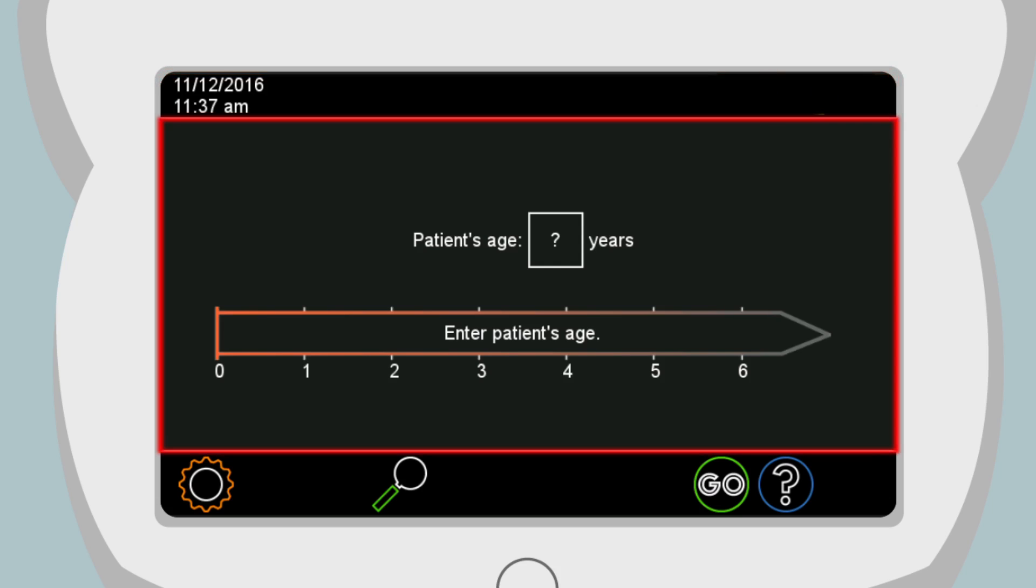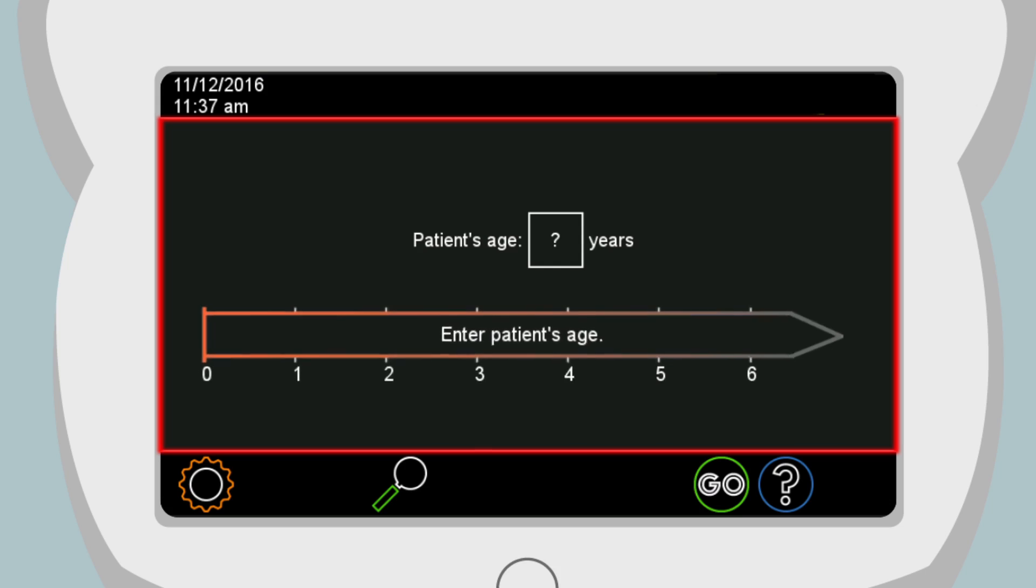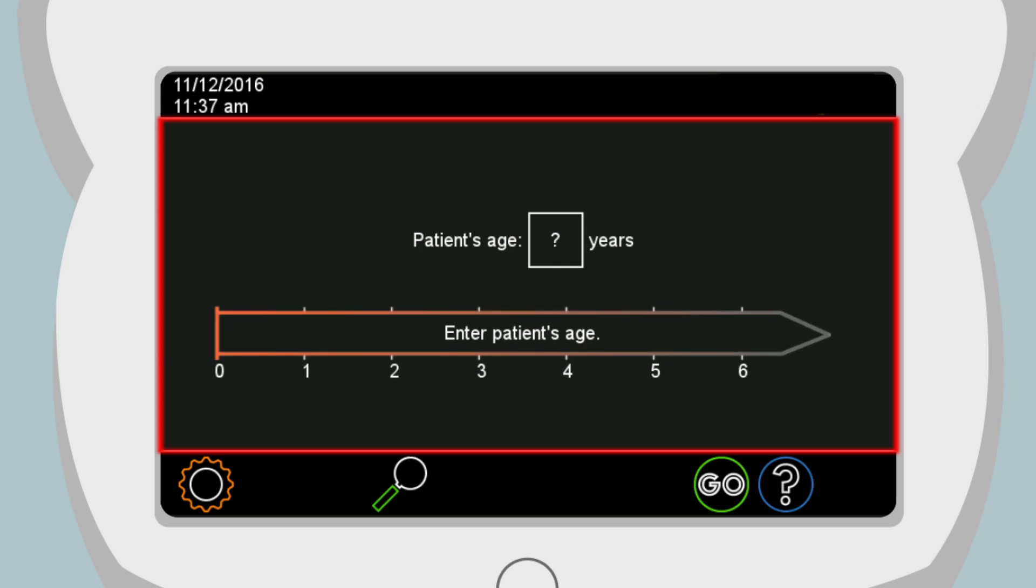The information section is where the main body of content is located. Shown here on the home page, the information section contains a timeline for a patient's age and years. The referral criteria are age-based, which is why it is very important to choose the correct age group.